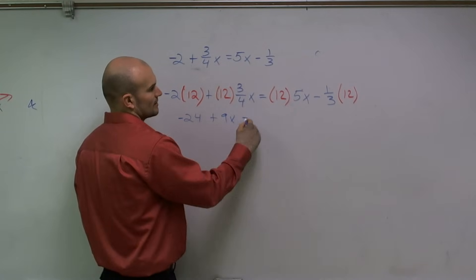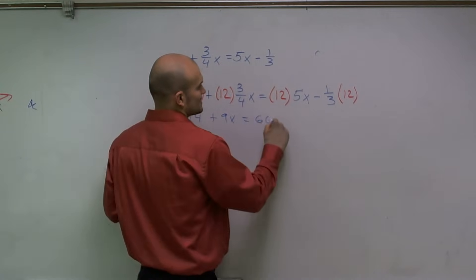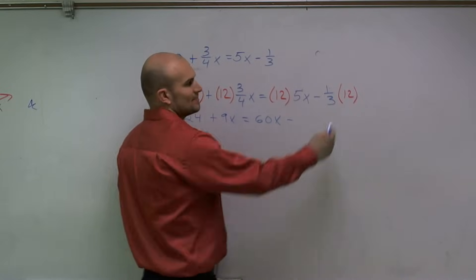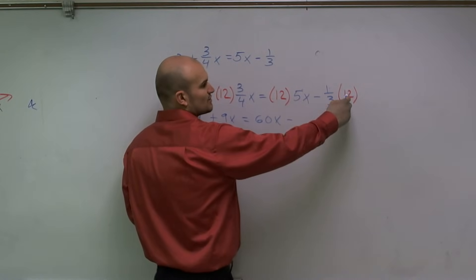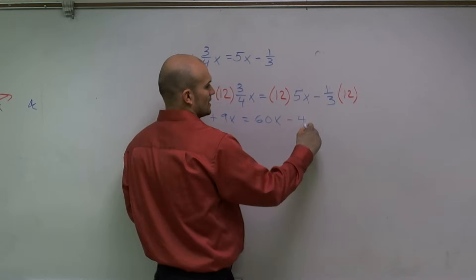So either way you get 9x. On the right side, 12 times 5 is 60x, minus—same thing—multiply first then divide by 3, you get negative 4. Or divide first, which is 4 times 1, still negative 4.